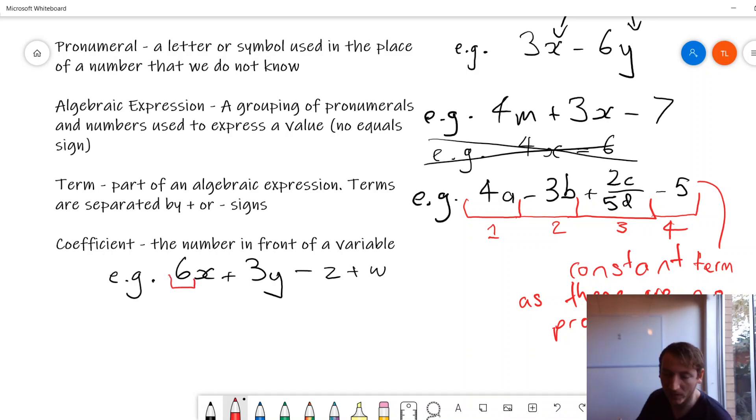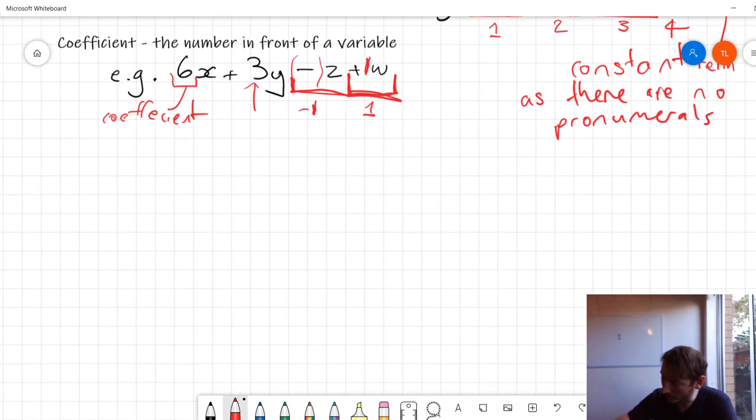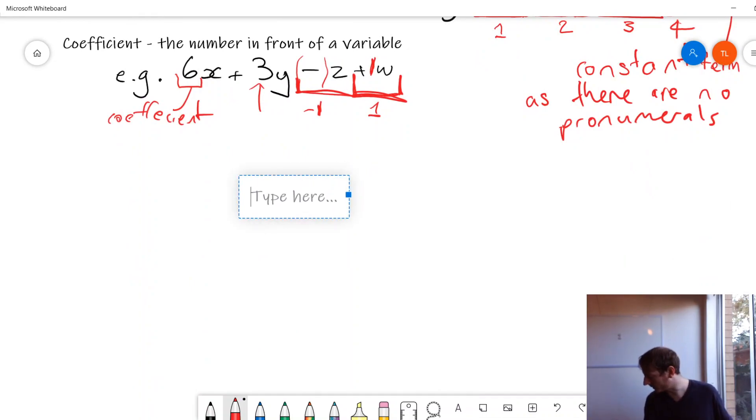All right so the coefficient of x is 6. That one looks pretty easy. There's 6 lots of this x so that is the coefficient. Coefficient of this one, I'm sure you can have a guess, y is 3. This one is where we get a bit trickier. What number is in front of the z? Well there is a z there, there's not 0 of them. There's actually minus 1z so the coefficient of this term is negative 1. And you might look ahead here and be able to see, well the coefficient of w is plus 1, or we never really write the plus, we just write 1 instead. Now that's because the w is there, there aren't 0 w's, there is 1 w there so the coefficient is 1.